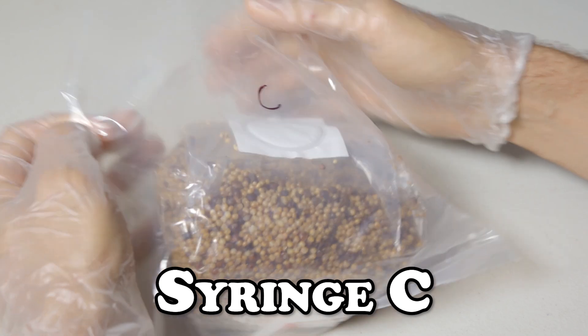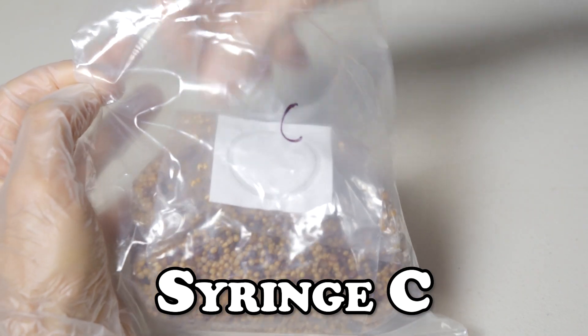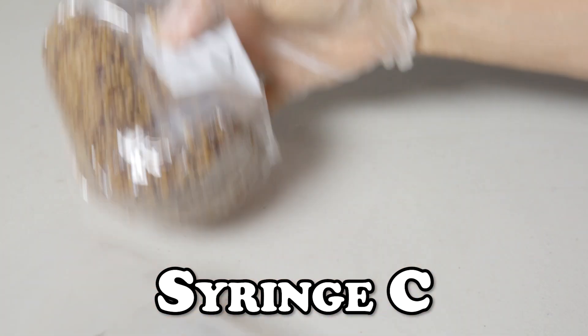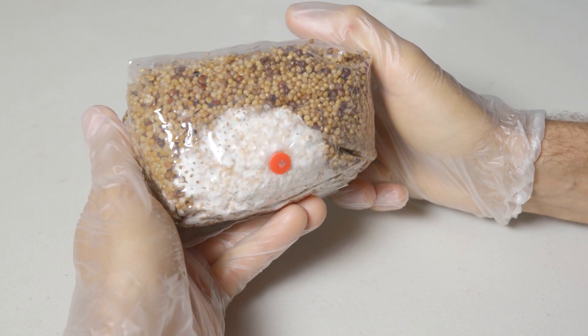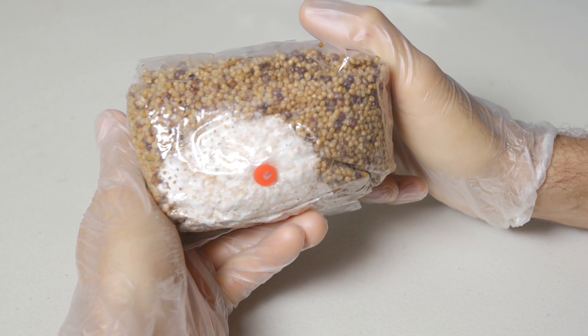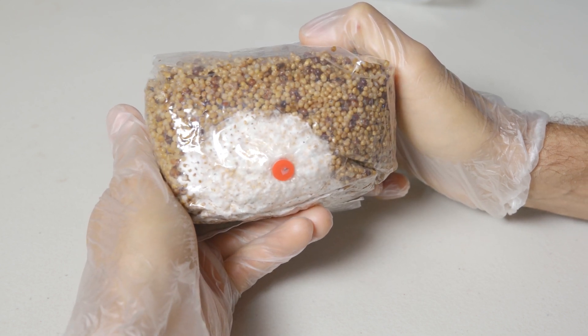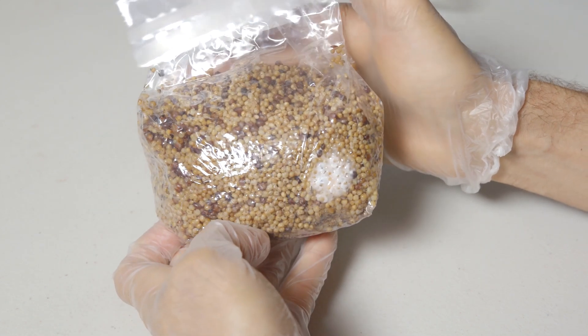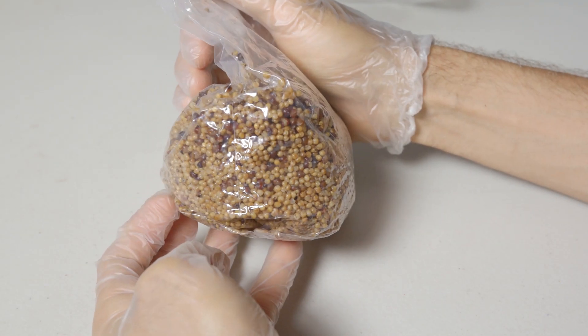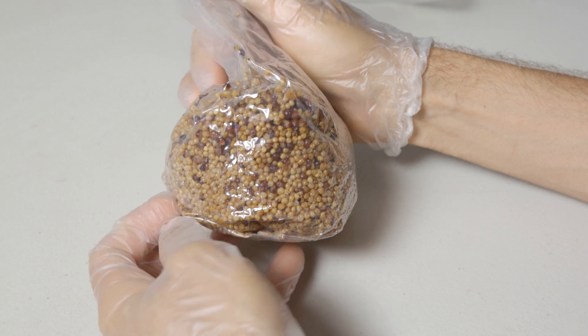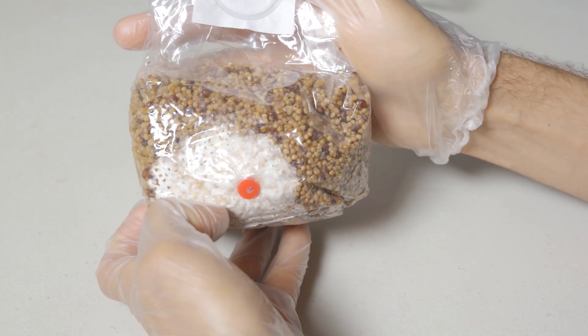Lastly we have bag C. Upon initial inspection we do have some mycelium growing here by the inoculation port. We don't have any evidence of degradation. This bag will continue colonizing effectively. Now we don't want to use antibiotics in grain applications, so a better method would be to start off with a clean syringe in the first place. That way we can avoid antibiotics altogether. This is done through the use of agar.